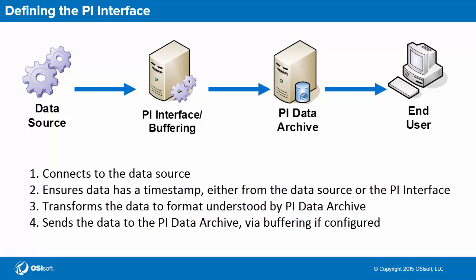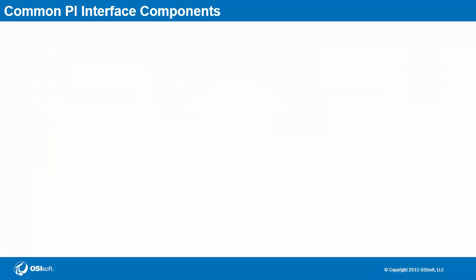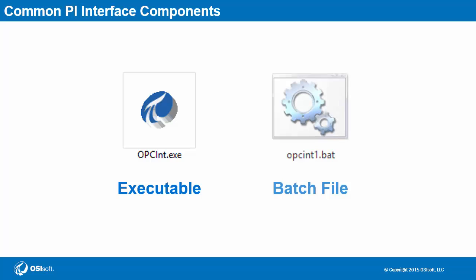For the majority of PI interfaces, there are two common components you'll see in their respective folders: the PI interface executable and one or more batch files. The executable is the program responsible for running the PI interface. The batch file contains specific parameters for a PI interface instance. For each PI interface instance running on the machine, there is a separate batch file associated with it that specifies the interface's settings.